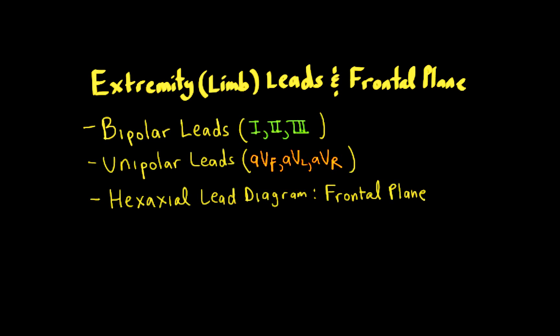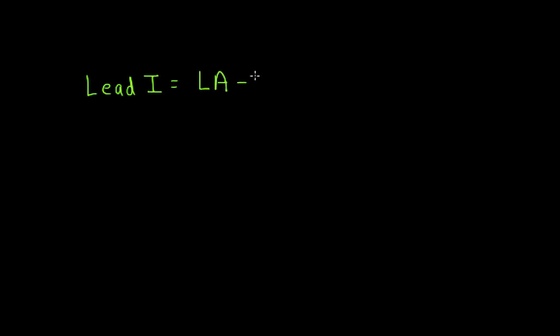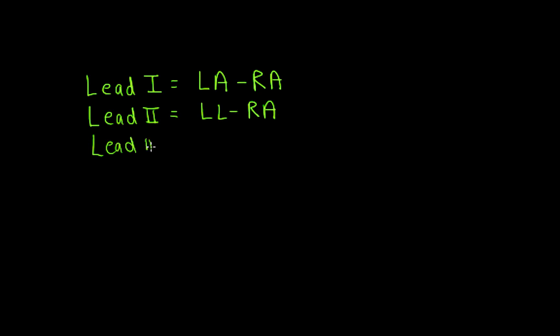Let's start with the bipolar leads. They have this name because they record the differences in electrical voltage between two limb electrodes. Lead 1 records the difference in voltage between the left arm electrode and the right arm electrode. Lead 2 records the difference between the left leg electrode and the right arm electrode. Lead 3 records the difference between the left leg electrode and the left arm electrode. Inside the electrocardiograph machine, these subtractions are done.